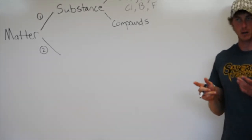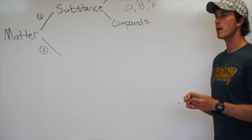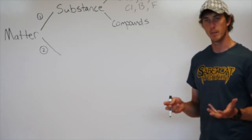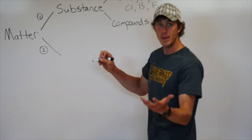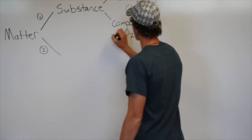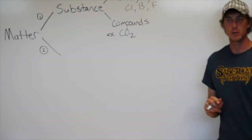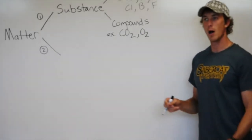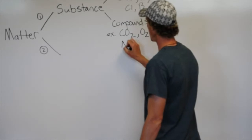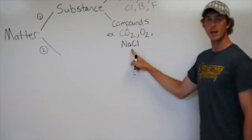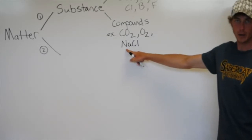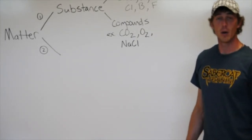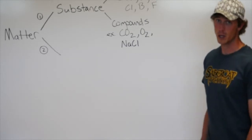When elements bond to each other — and we'll get into what a bond really is later — you're talking about a compound. A compound is defined as two or more elements bonding together. Examples would be CO2, which you're breathing out right now, and O2 (oxygen), which you're breathing in. You could also bond sodium and chlorine together — NaCl — that's salt. Sodium alone would explode in water, and chlorine was used in mustard gas, but bonded together you put it on food.